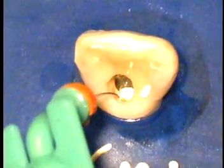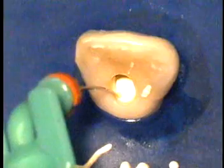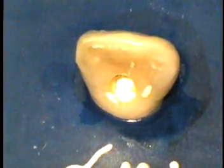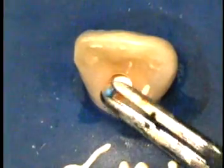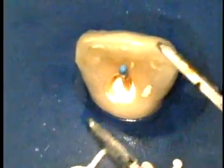Put the Navi tip 2 to 3 millimeters coronal of the apex, and begin to inject as you withdraw. If you hit a bind, back up from that bind before you begin injecting. Inject until you fill to the canal orifice, insert your gutta-percha point, burn it off with a very hot plugger or touch and heat, and then you can temporize or restore at this time.